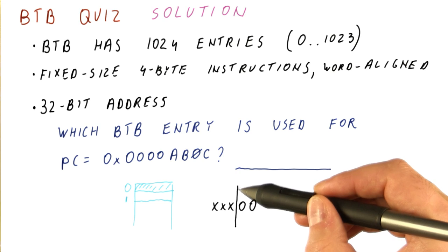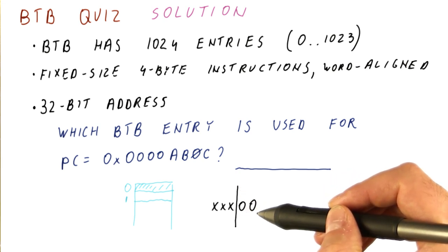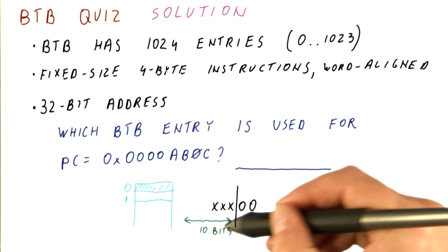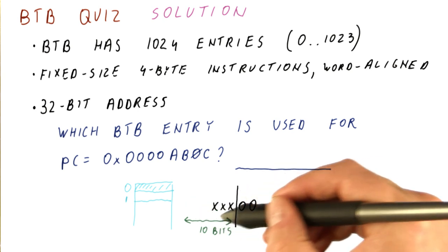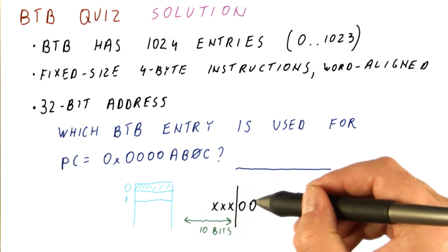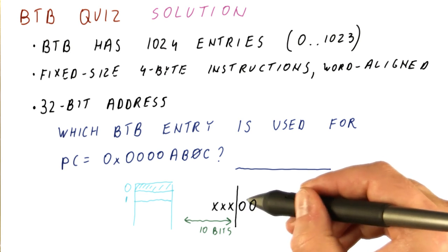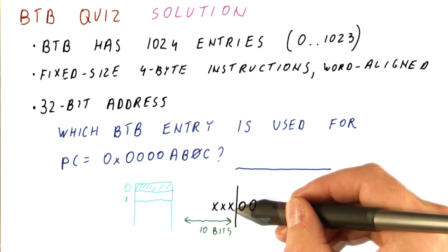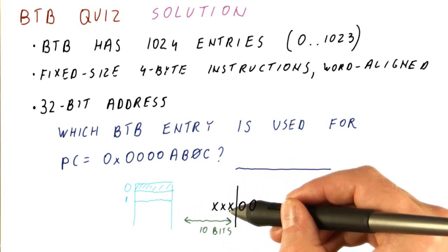So in this case, what should happen is we should not use the least significant 10 bits, and instead we use these 10 bits. So they're the least significant bits that can be different among instructions. Basically these bits are always zero, so they're just going to waste entries. We need to take the least significant 10 bits that are still different among different instructions.